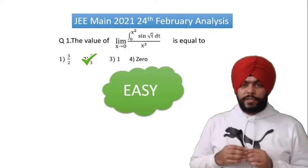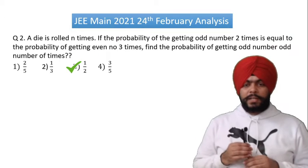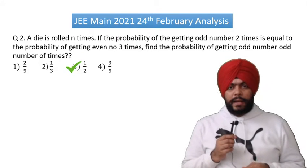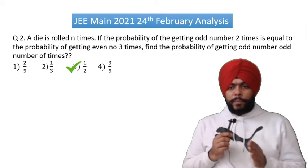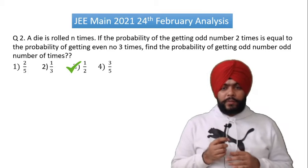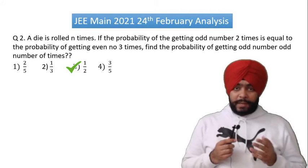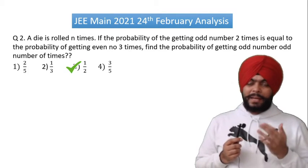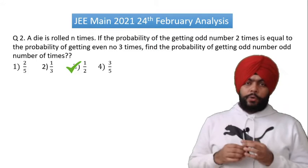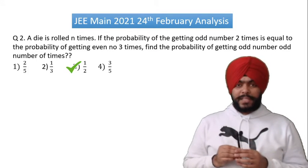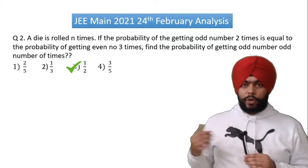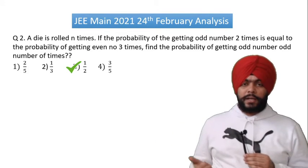The second question was: a die is rolled n times, and the probability of getting an odd number 2 times is equal to the probability of getting an even number 3 times. The language is confusing, so some kids struggled. Many could not identify that this is a binomial distribution problem. So this is a difficult question for sure.